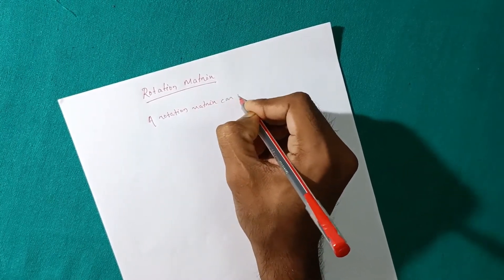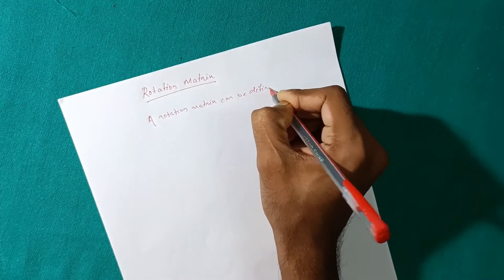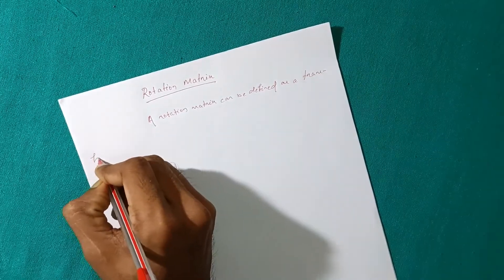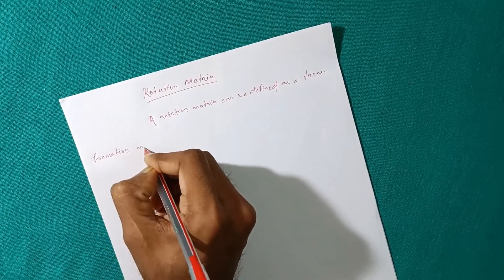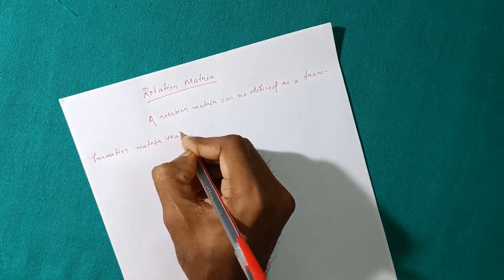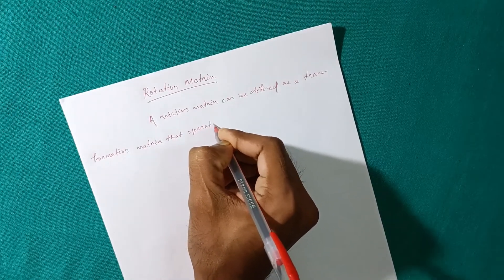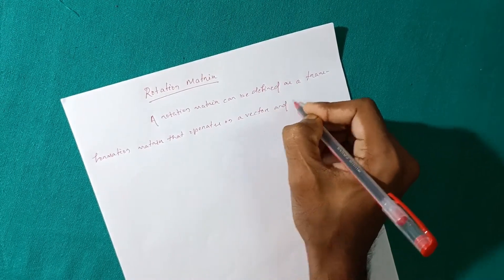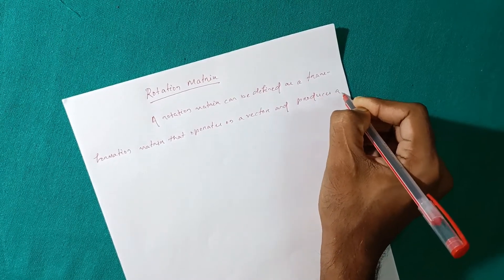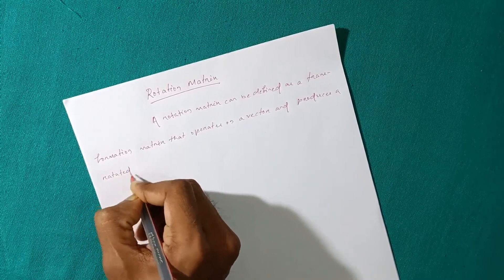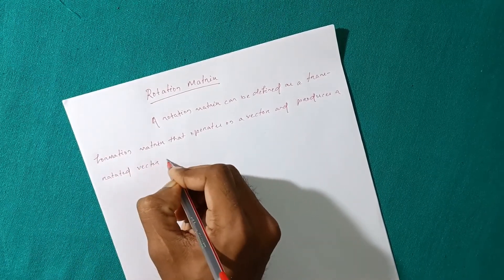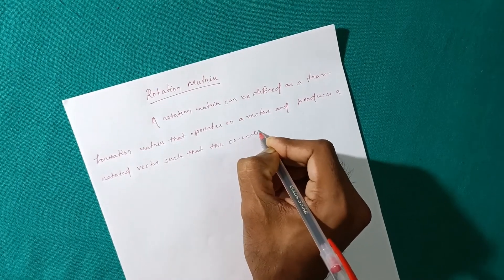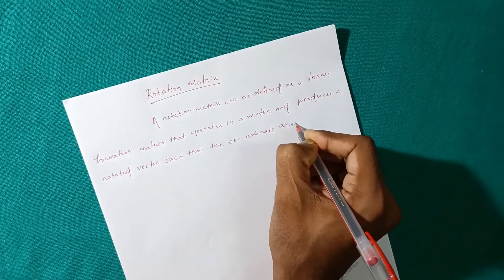Rotation matrix can be defined as a transformation matrix that operates on a vector and produces a rotated vector such that the coordinate axis always remain fixed.